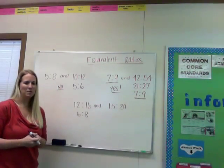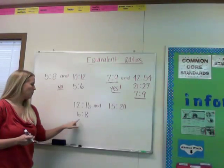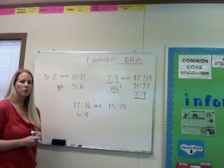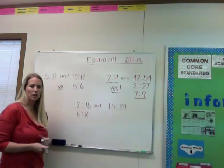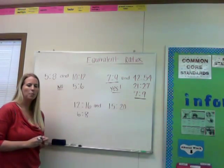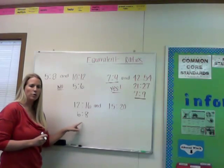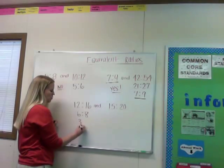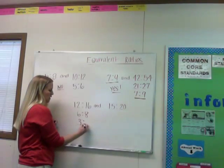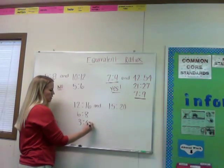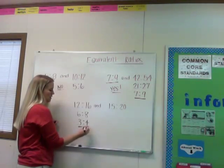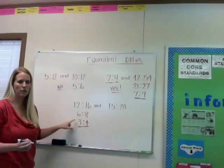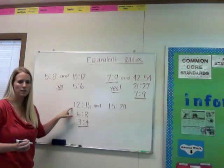I'm going to take it in baby steps. So I'm at 6 and 8. I'm going to ask myself, is there any number that can go into both 6 and 8? The answer is yes — they're both even, so I'm going to divide by 2 again. 6 divided by 2 is 3, and 8 divided by 2 is 4. So 3 to 4 is the simplest form for 12 to 16.